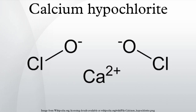Similarly, calcium hypochlorite reacts with hydrochloric acid to form calcium chloride, water, and gaseous chlorine: Ca(OCl)2 + 4HCl → CaCl2 + 2H2O + 2Cl2.